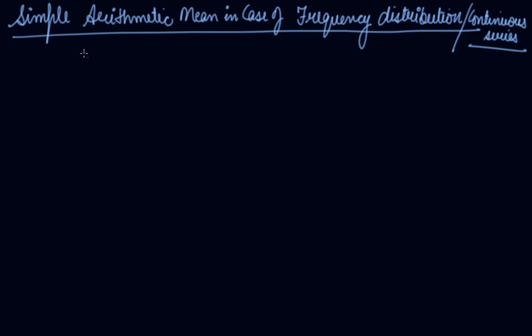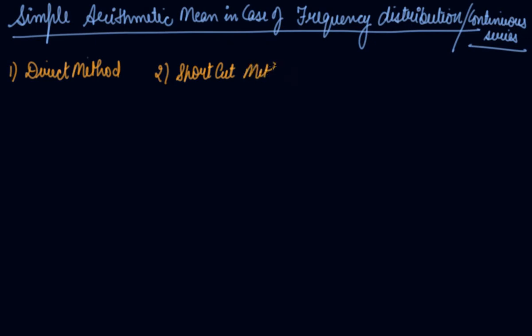In this video, we will be studying the calculation of simple arithmetic mean in case of frequency distribution, also called the case of continuous series. There are three methods: the direct method, the shortcut method, and the step deviation method.